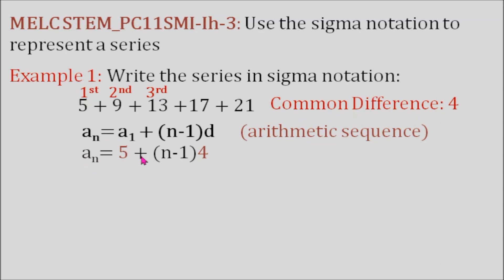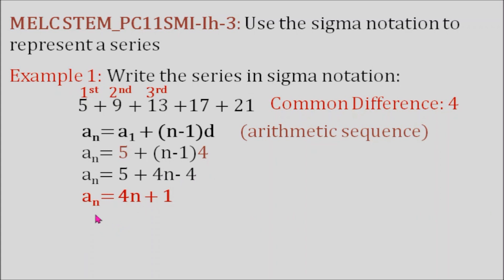a sub n equals 5 plus the quantity n minus 1 times 4. Applying the distributive property, that's 4 times n and 4 times negative 1, so a sub n equals 5 plus 4n minus 4. Combining 5 and negative 4, the simplest form is a sub n equals 4n plus 1. To write this in sigma notation, we write the rule 4n plus 1, with n starting from 1 and the last value being 5 because we need 5 terms. This is read as the sum of the terms 4n plus 1 where n is from 1 to 5.